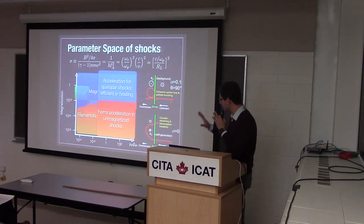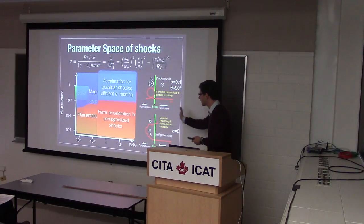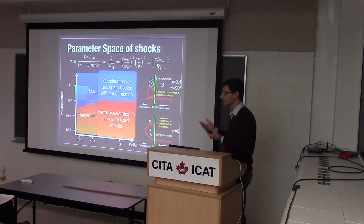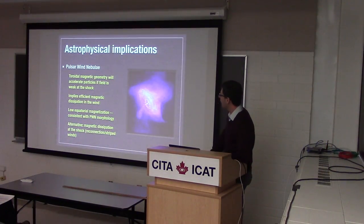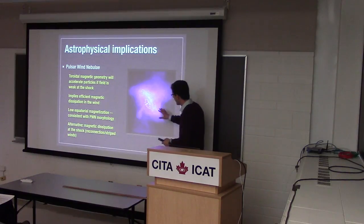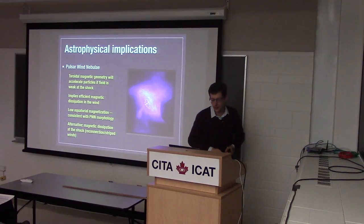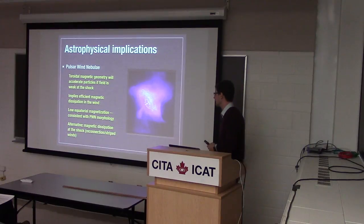Taking this at face value: at first we thought problems with quasi-perpendicular shocks would go away with more work, but they don't seem to go away — it appears to be a robust conclusion. For pulsar wind nebulae, at face value it's a disaster because they have a very nice toroidal magnetic field, which should kill any acceleration at the shock.